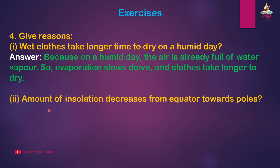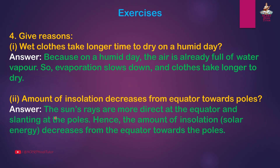Second, amount of insolation decreases from equator towards poles. Answer: The sun's rays are more direct at the equator and slanting at the poles. Hence, the amount of insolation, i.e. solar energy, decreases from the equator towards the poles.